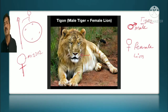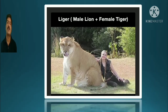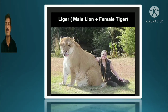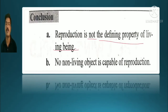Tigon is a hybrid of male tiger and female lion. Liger is another hybrid — male lion crossed with female tiger — producing a large lion-like body with tiger-like bands. These are sterile hybrids. So reproduction is not the defining property of living beings, and no non-living object is capable of reproduction.